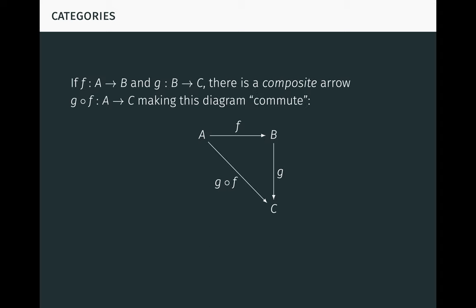First, if F is an arrow from A to B, and G is an arrow from B to C, then there is a composite arrow G ∘ F from A to C, which makes the following diagram commute. In this diagram, you can see that we have the arrow F from A to B, and the arrow G from B to C, as well as the composite arrow G ∘ F from A to C. The composite represents the result of first applying F, and then applying G.